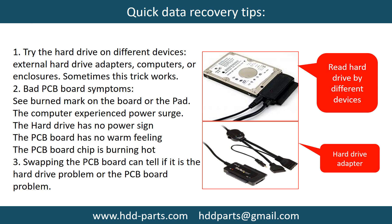There are some simple ways to recover data from a hard drive. One of them is to try reading the hard drive using different devices, such as different external hard drive adapters, computers, or enclosures. Because different devices use different ways to read a hard drive, sometimes this trick works. Another way is swapping the hard drive PCB board. Swapping the PCB board can fix problems caused by the PCB board, and while there is a cost involved, it is much cheaper than sending the hard drive to a data recovery firm.